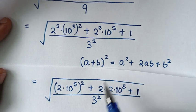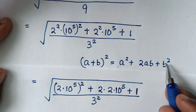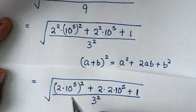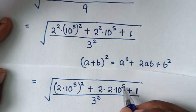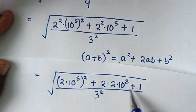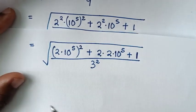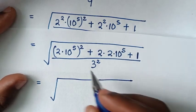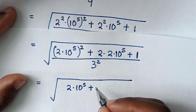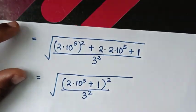Now we can see that a squared is (2 times 10 to the power of 5) squared, so a is 2 times 10 to the power of 5. And b squared is 1 squared, so b is 1. When we compare with 2ab, it confirms a is 2 times 10 to the power of 5 and b is 1. So the numerator is now in the form (a + b) squared, which is (2 times 10 to the power of 5 plus 1) squared.